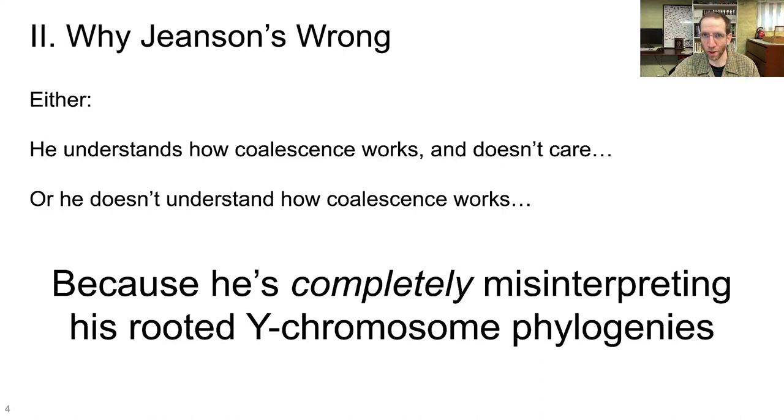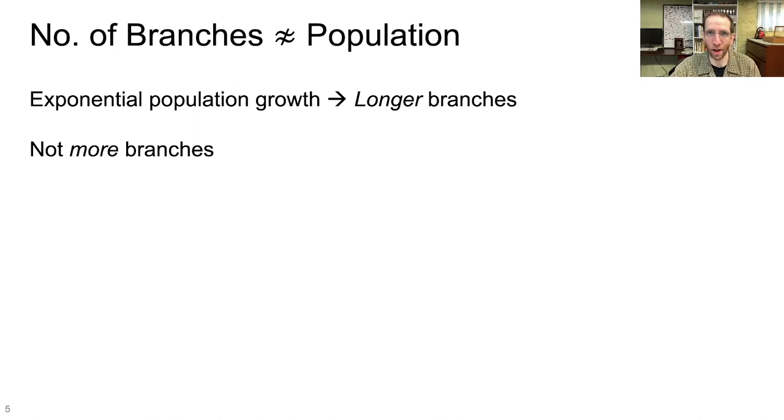The short version is that the number of branches on a phylogenetic tree does not approximate the population that that tree is modeling. Specifically, Dr. Jeanssen says that you can correlate the exponential population growth in human populations in recent human history with the exponential growth in branches on his rooted Y chromosome phylogeny. The problem here is that exponential population growth phylogenetically displays as longer branches, not more branches, and this is extremely basic.